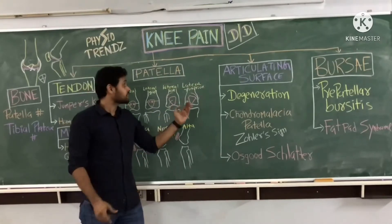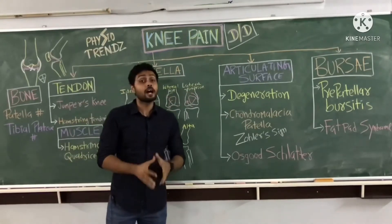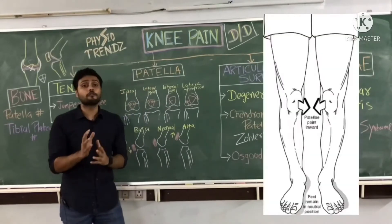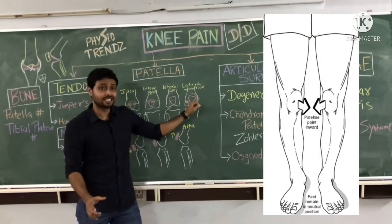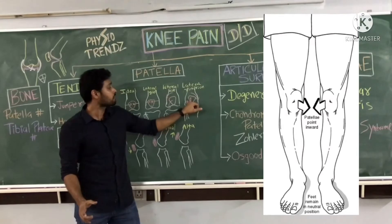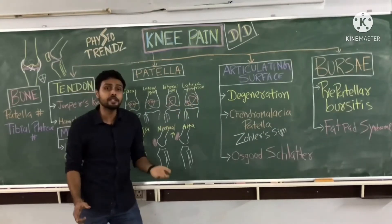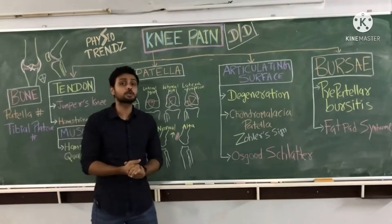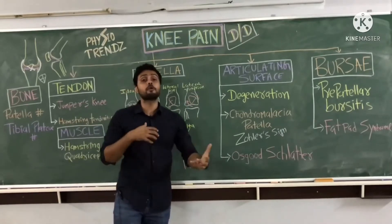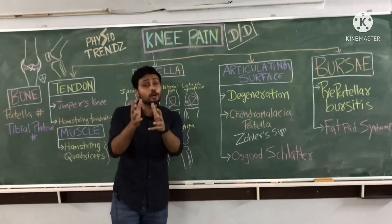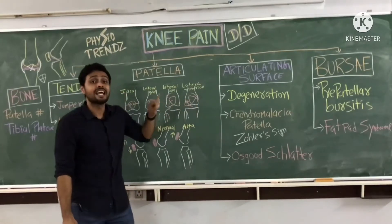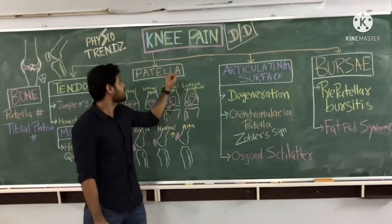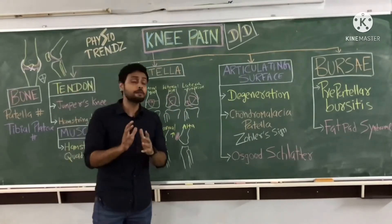The next condition is lateral rotation of the patella, also known as squinting of the patella. In this condition, the patella rotates in a medial direction from the upper side and lateral direction from the inferior side. This condition can also cause faulty mechanics in the knee joint, leading to knee pain, so we need to identify and correct it.